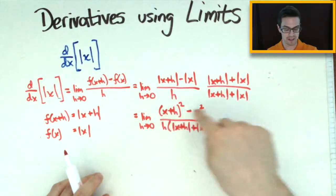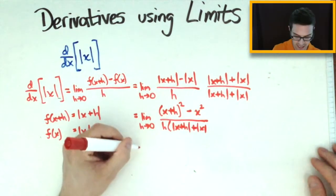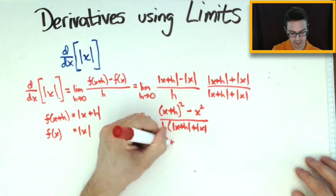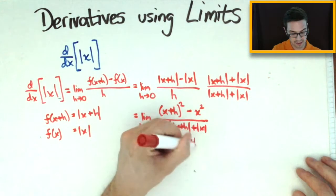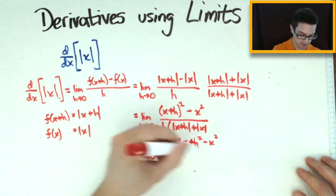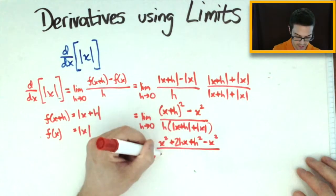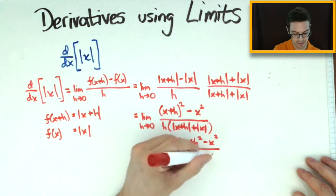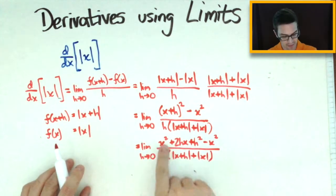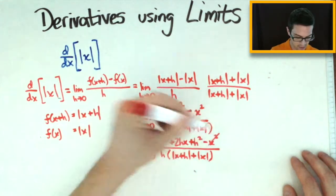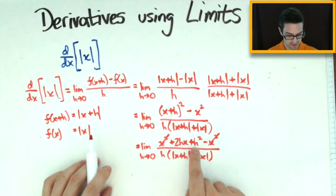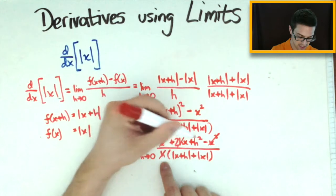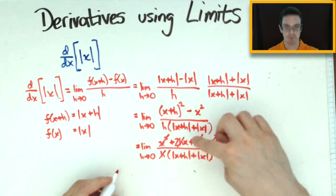Next I'm going to simplify the top by expanding it out. You end up with the limit as h goes to zero of x squared plus 2hx plus h squared minus x squared, all over h times the quantity of the absolute value of x plus h plus the absolute value of x. The x squared minus x squared cancels, and I can factor out an h from the top and divide it out with the h in the denominator.